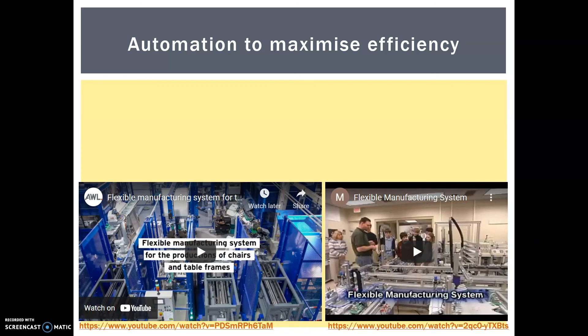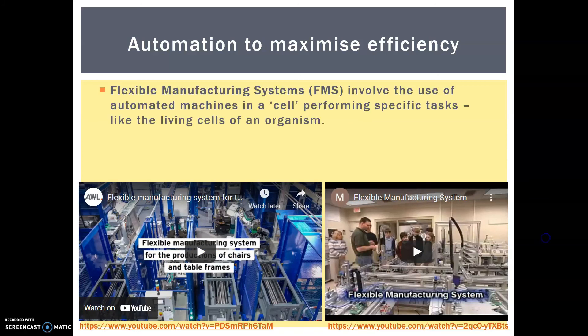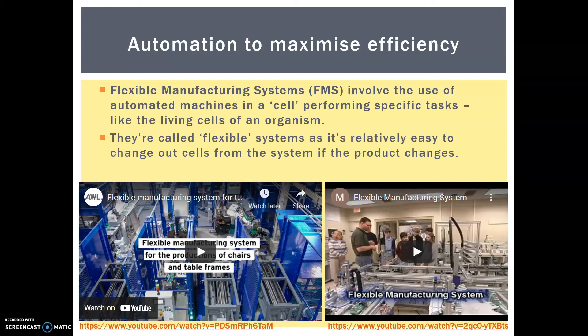Hopefully that was a really interesting overview. Now for some notes. When we're talking about automation to maximize efficiency, we're talking about flexible manufacturing systems — involving the use of automated machines in a cell. It's called a cell because, like living organisms, each cell does a particular job: your liver cell is different to your skin cell. They're called flexible systems because it's easy to change the cells between systems if the product changes — they might just be making chairs but make different batches over different years. They're best suited to mid-volume batch and mass production. I've got two videos to really emphasize this point.